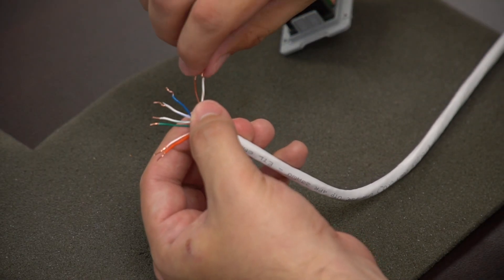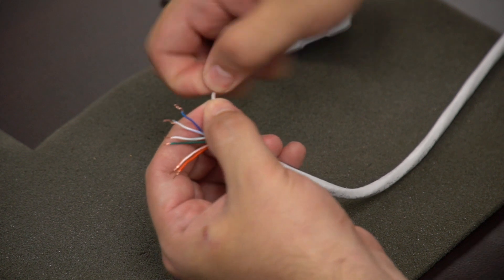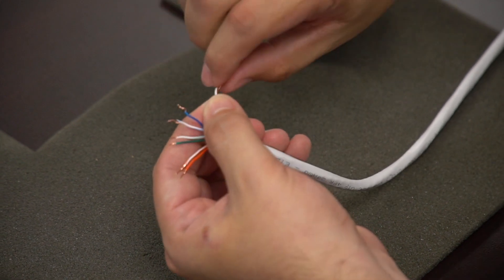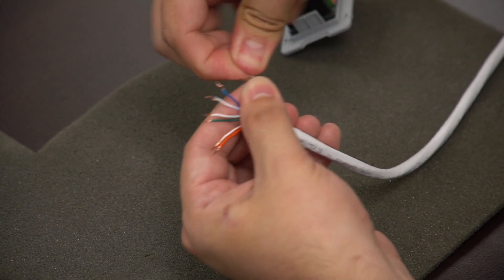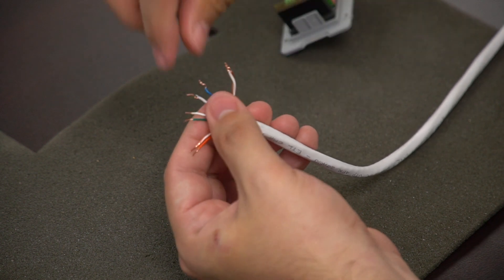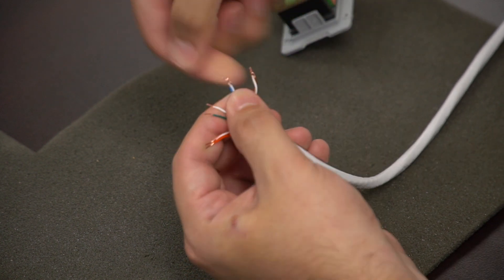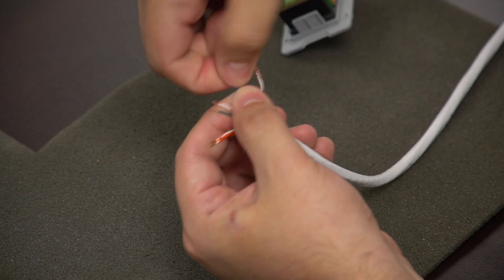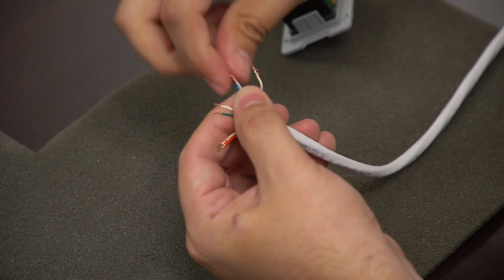Now in order to get the PoE to work, we will have to pair the brown white and the brown wire and twist them together. We're also going to be doing this with the blue and blue white wires, for they need to be two pairs which connects into the back end of the GDS block.